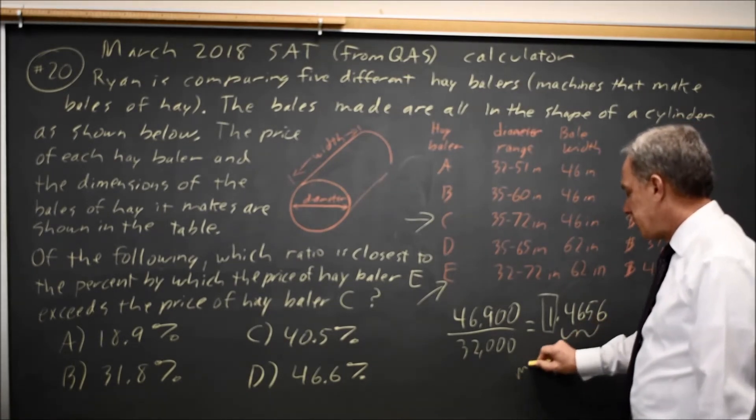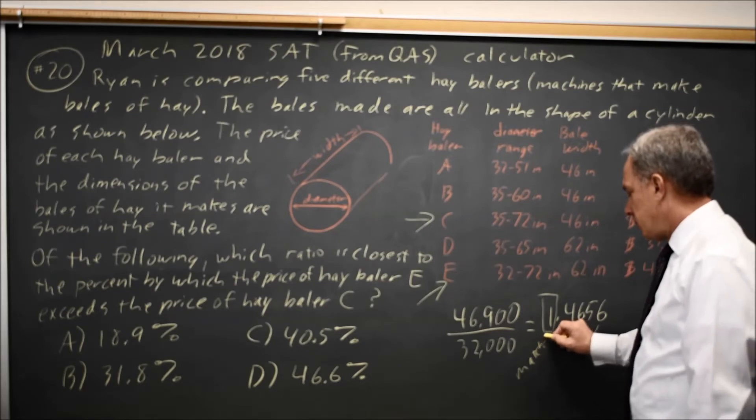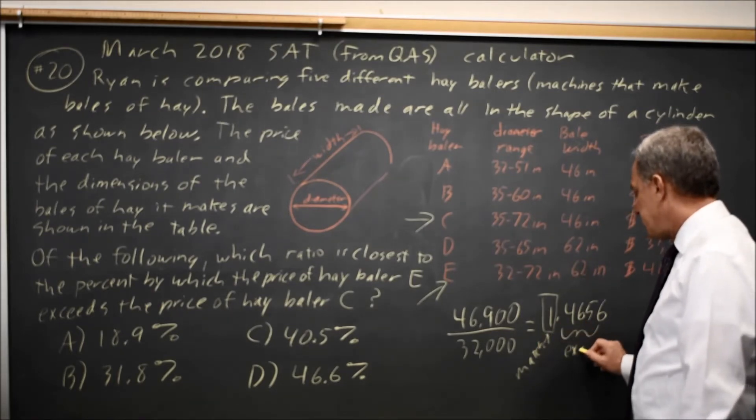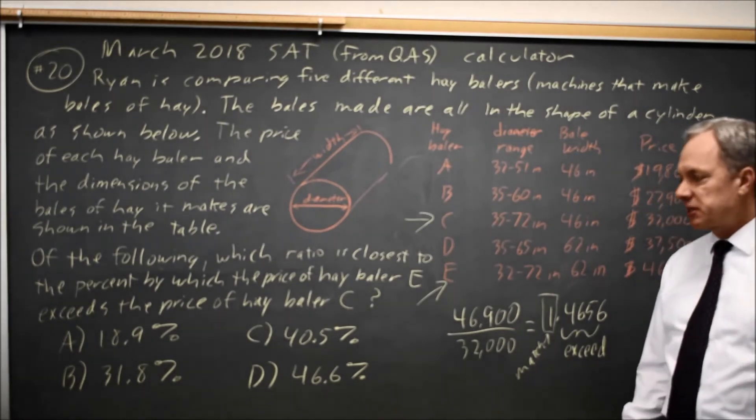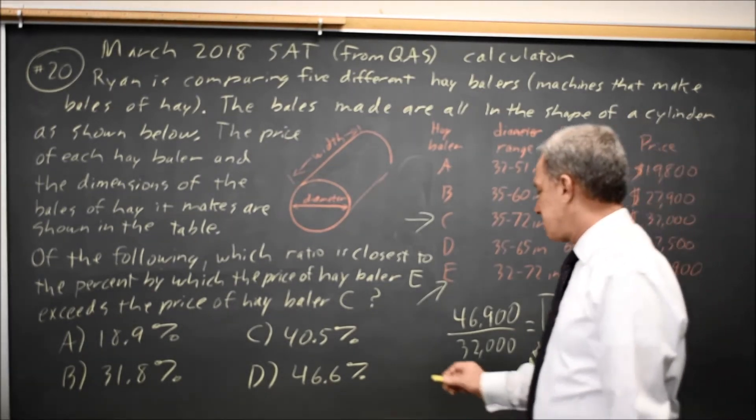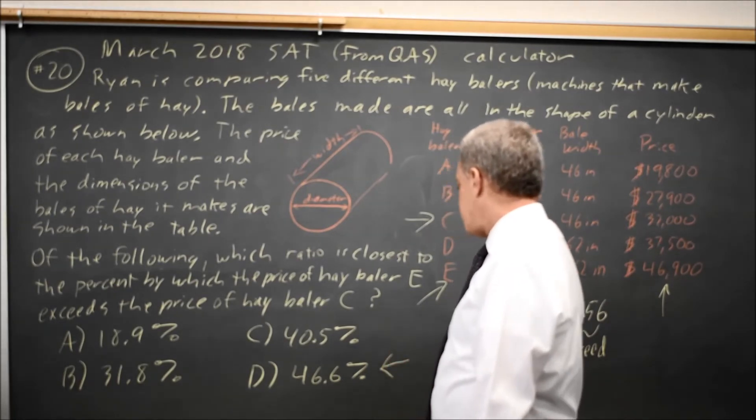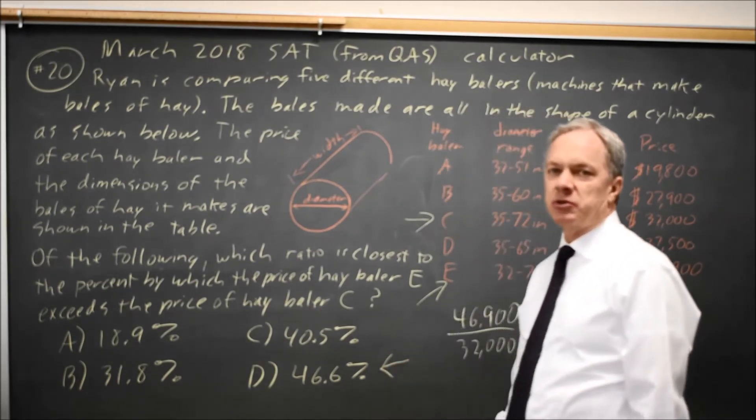One is match and the rest is how much we exceed, and 0.46 is 46 percent, so 0.466 rounding would be 46.6 percent is the amount by which we exceeded.